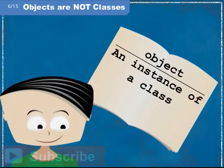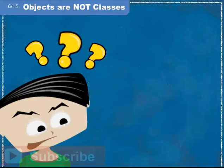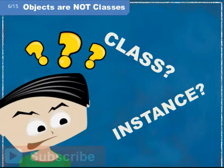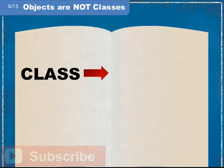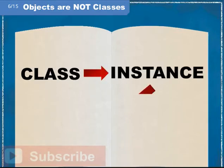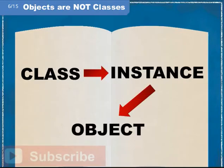Let's start with the textbook definition of an object. An object is an instance of a class. This is actually an excellent definition, provided you already understand the meaning of the terms class and instance. Let's walk through the definitions and roles of these terms using some examples you are already familiar with.